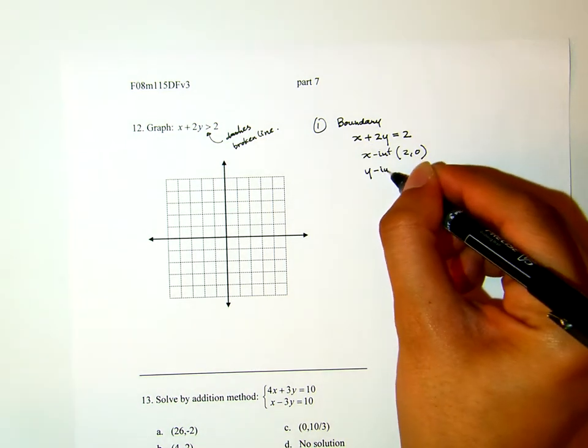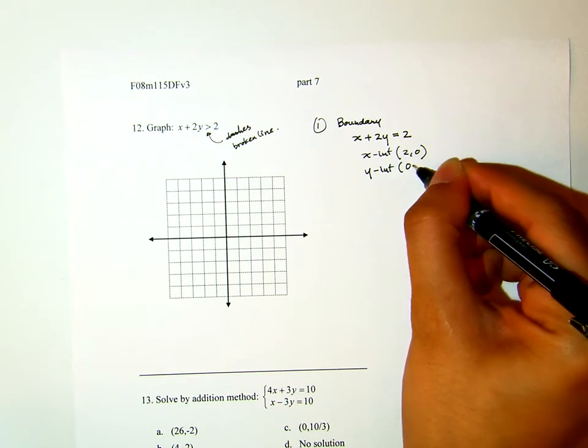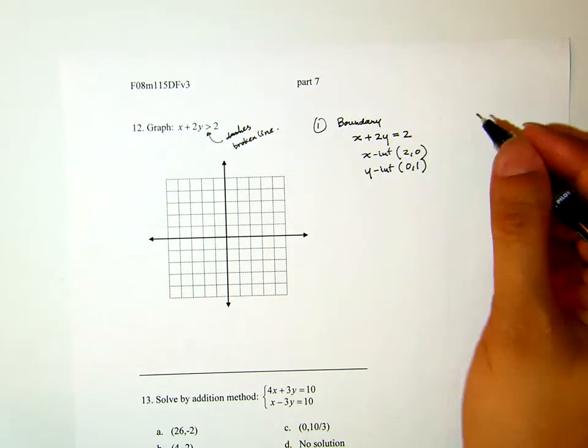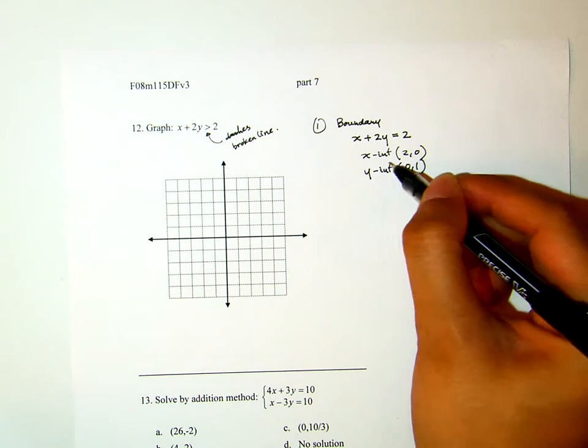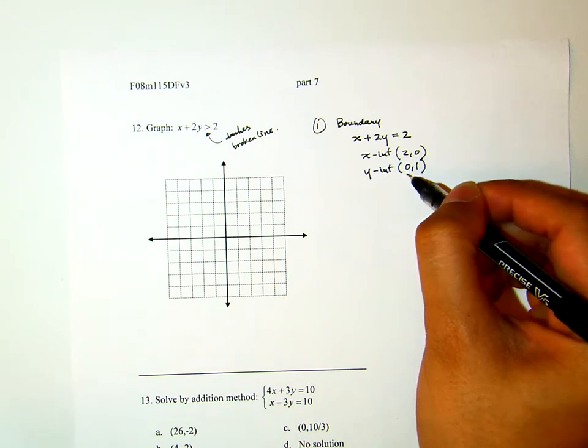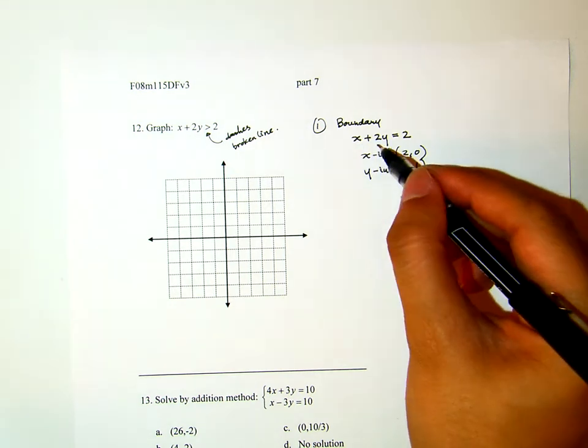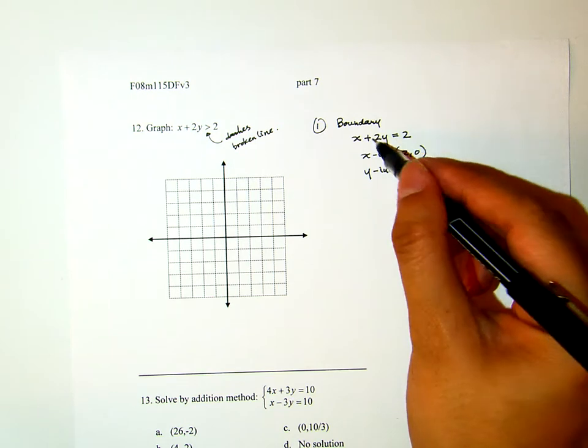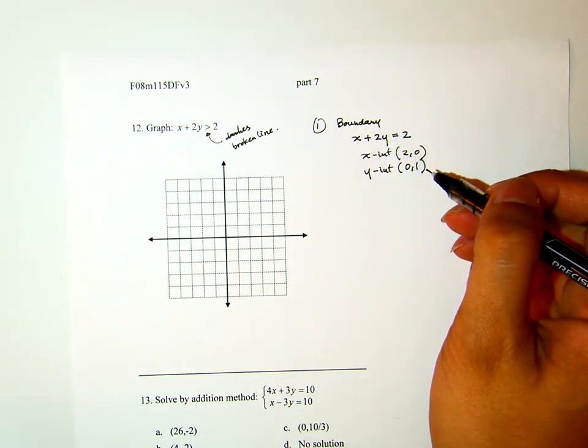And the y-intercept is 0,1. For y-intercept, x is 0, right? You plug in x equals 0 and solve for that equation. 2y equals 2, therefore y equals 1.